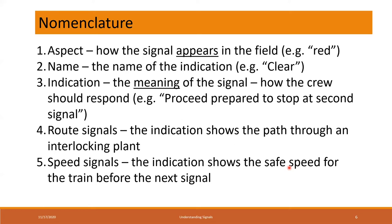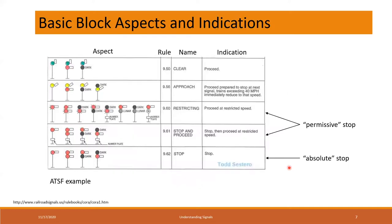The indication is the meaning of the signal - it tells the crew how they should respond when they see that signal. For example: proceed prepared to stop at the second signal. This is your Flash Gordon magic decoder ring, because this tells the engineer how they decode what the signals are saying. The indications are the rows - I'm showing five indications. The first column is the aspect, which is the appearance of the signal. For the proceed indication, the ATSF had three different aspects they could use. They had four for approach. The next column is the rule number from the employee rulebook.